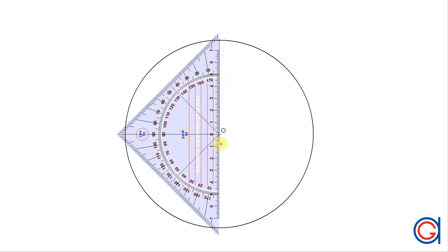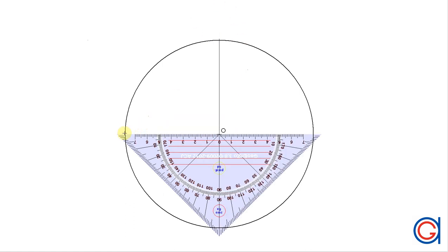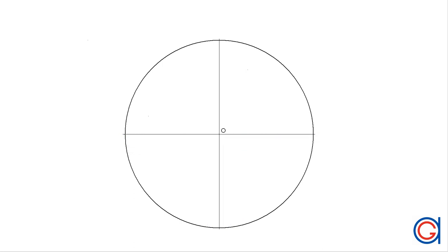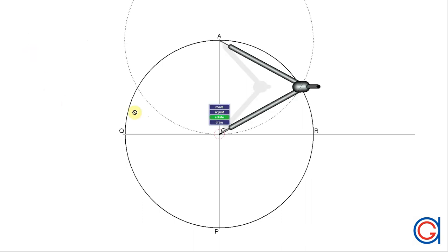The first step is to draw perpendicular vertical and horizontal diameters as can be seen here in the video. I do this using a 45-degree set square with a built-in protractor. And as you can see, we cut our circumference four times at points A, R, P, and Q. And we also prolongate our horizontal diameter to the right of the circle.